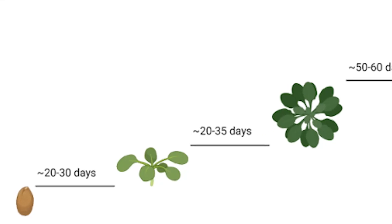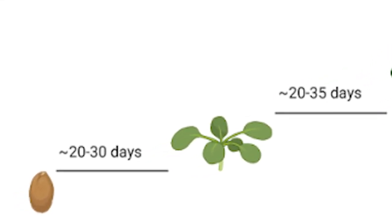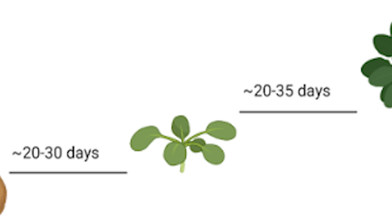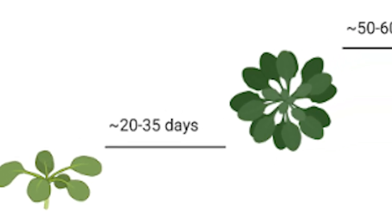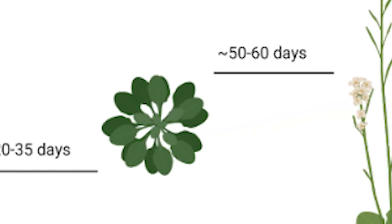For our plant choices, we ultimately decided on using Arabidopsis thaliana due to their rapid growth and life cycles, which allowed us to have multiple generations.